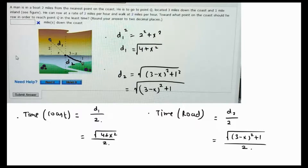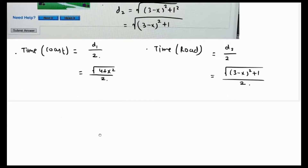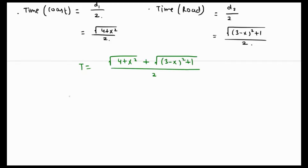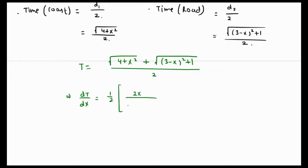To find the least time, we differentiate the total time expression and equate it to zero. The total time is the sum of the two individual times. Differentiating total time T with respect to x: dT/dx equals one-half times 2x over 2 times the square root of (4 + x²).